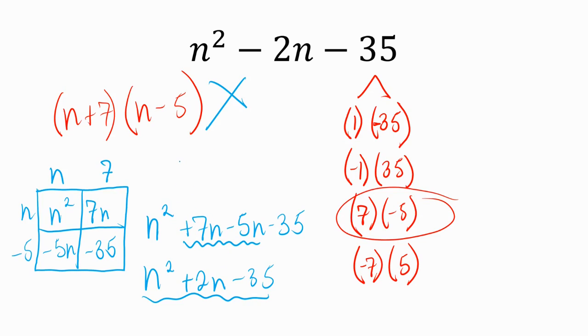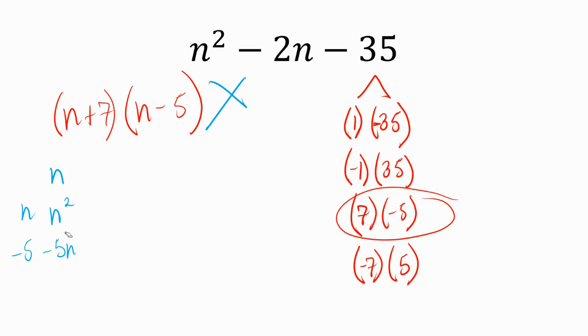So where was their mistake? Their mistake is when they picked which factors were correct. What we should do is actually take the time and figure out what they add up to. If I add 1 plus negative 35, that gives me negative 34. If I add negative 1 and 35, that gives me positive 34. If I add 7 and negative 5, that's like 7 minus 5, giving positive 2. But if I add negative 7 and 5, that gives me negative 2.